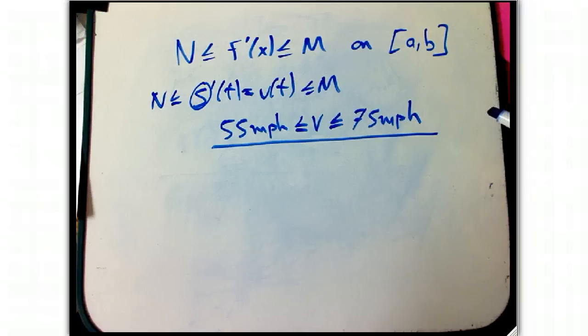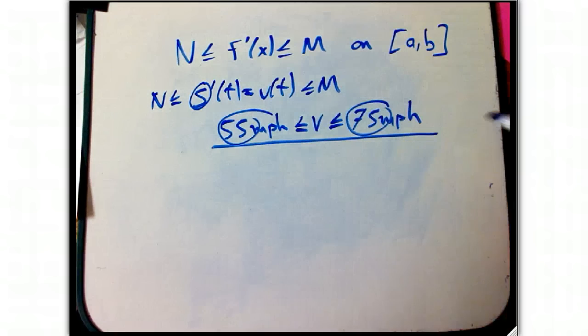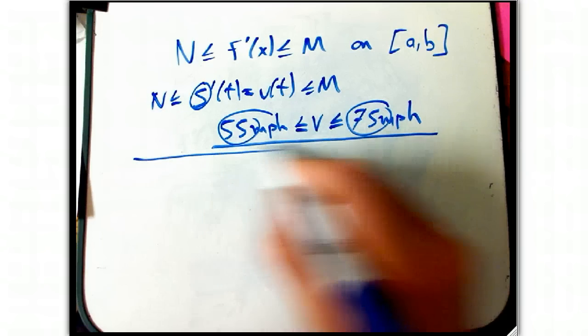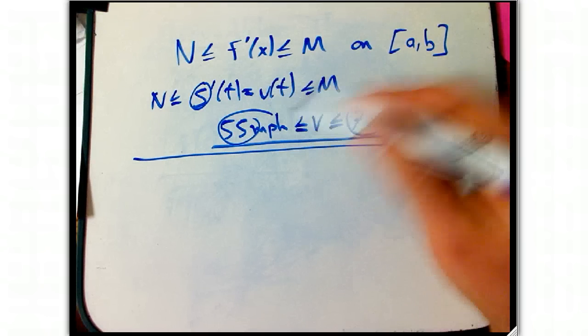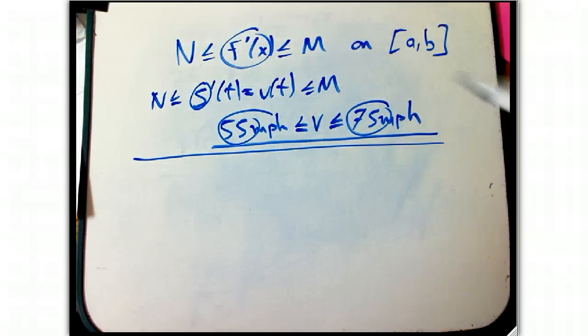I'm going to be able to say something about how far the position, what's the position going to do, in particular, the change in position in a given time. In one hour, you're going at least 55 miles and less than 75 miles, for example. So, that's the kind of statement we're going to have, that's the kind of intuition we want. If we know something about the velocity, we know something about the position. If we know something about f prime, we know something about f.